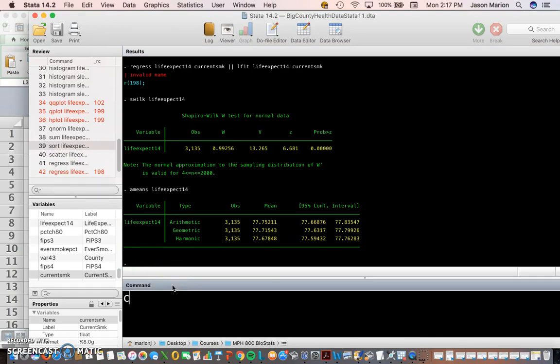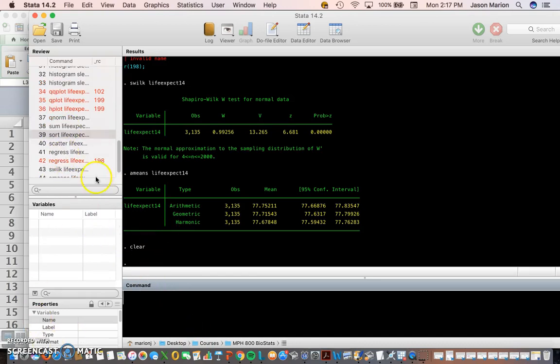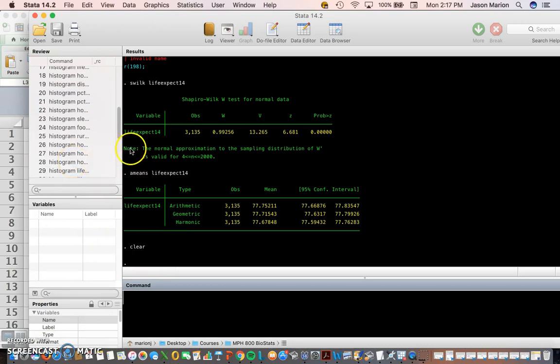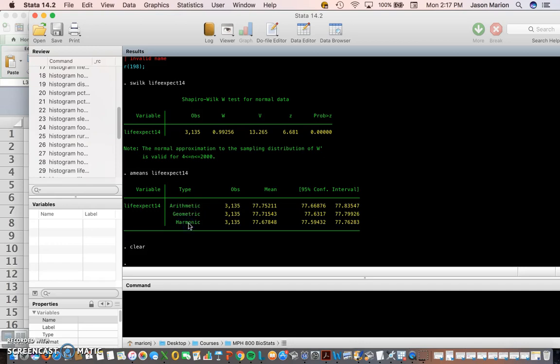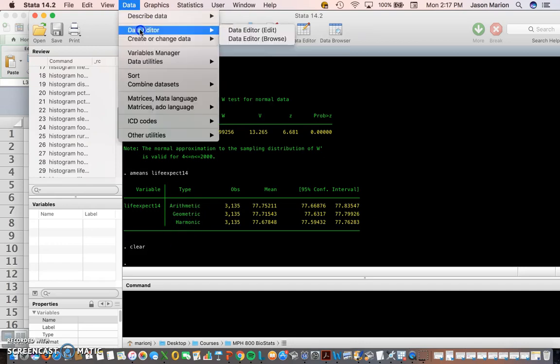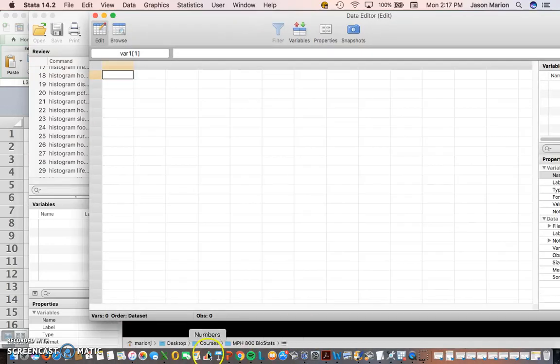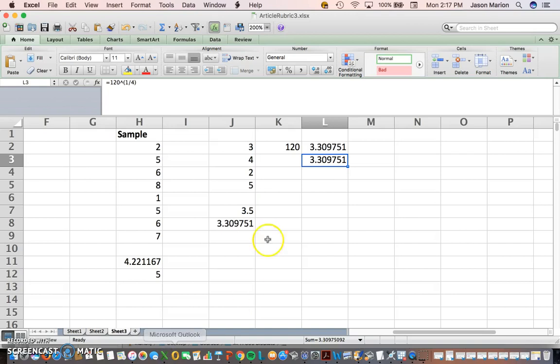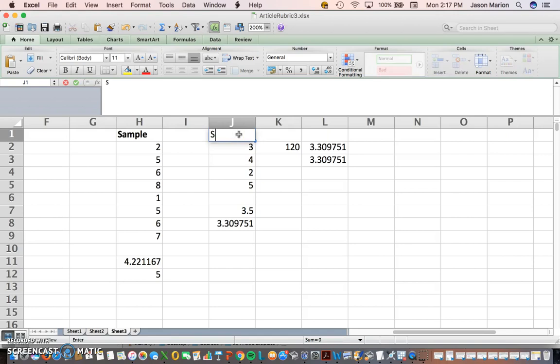So if we want to do this in Stata, clear this out real quick. So I had data on life expectancy, you can still see it. And the command was AMEANS life expectancy. And when we did that, it gave us the arithmetic, geometric, harmonic. If I go to the data editor and manually enter numbers that we used before in Excel - 3, 4, 2, and 5 - copy and paste these in. I'll give them a name: sample.